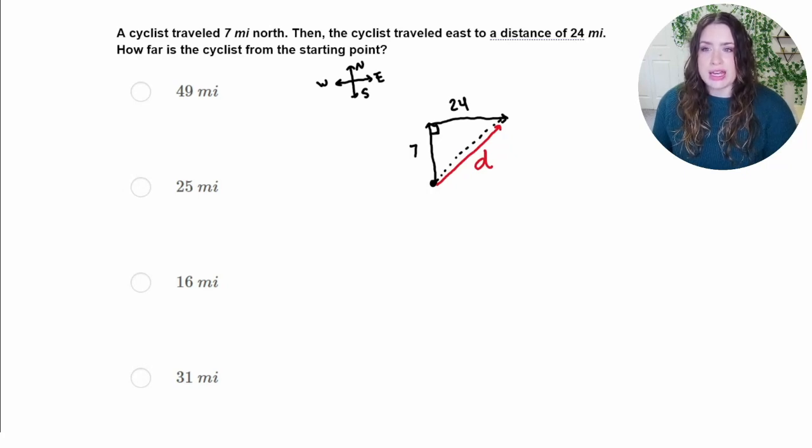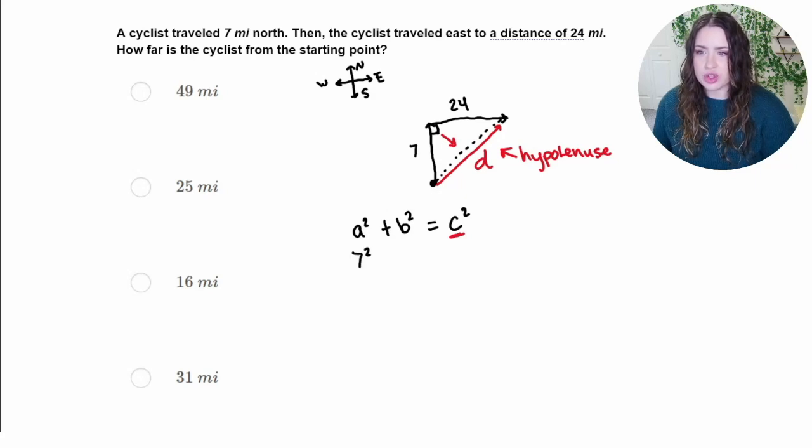So we can go ahead and use the Pythagorean theorem here, which only works on right triangles, which this one is. So we can go ahead and use the Pythagorean theorem, which is a squared plus b squared equals c squared, in order to solve this problem. Now it's important that the a and the b are the legs, while the c is going to be the hypotenuse, which is the longest side, and is also the side opposite of that right angle. So as I plug in these values, I can do 7 squared plus 24 squared equals that distance squared. And then I just need to evaluate and solve for d. So 7 squared is 49.